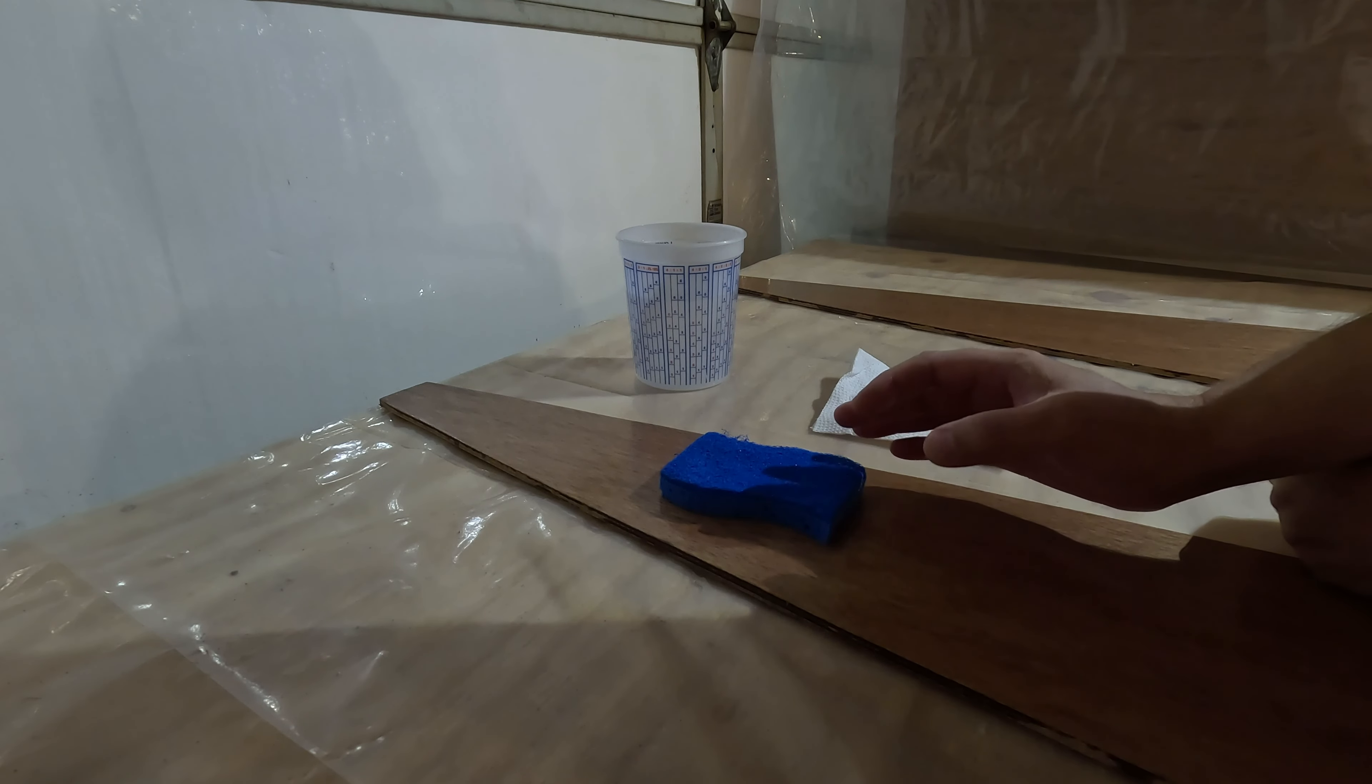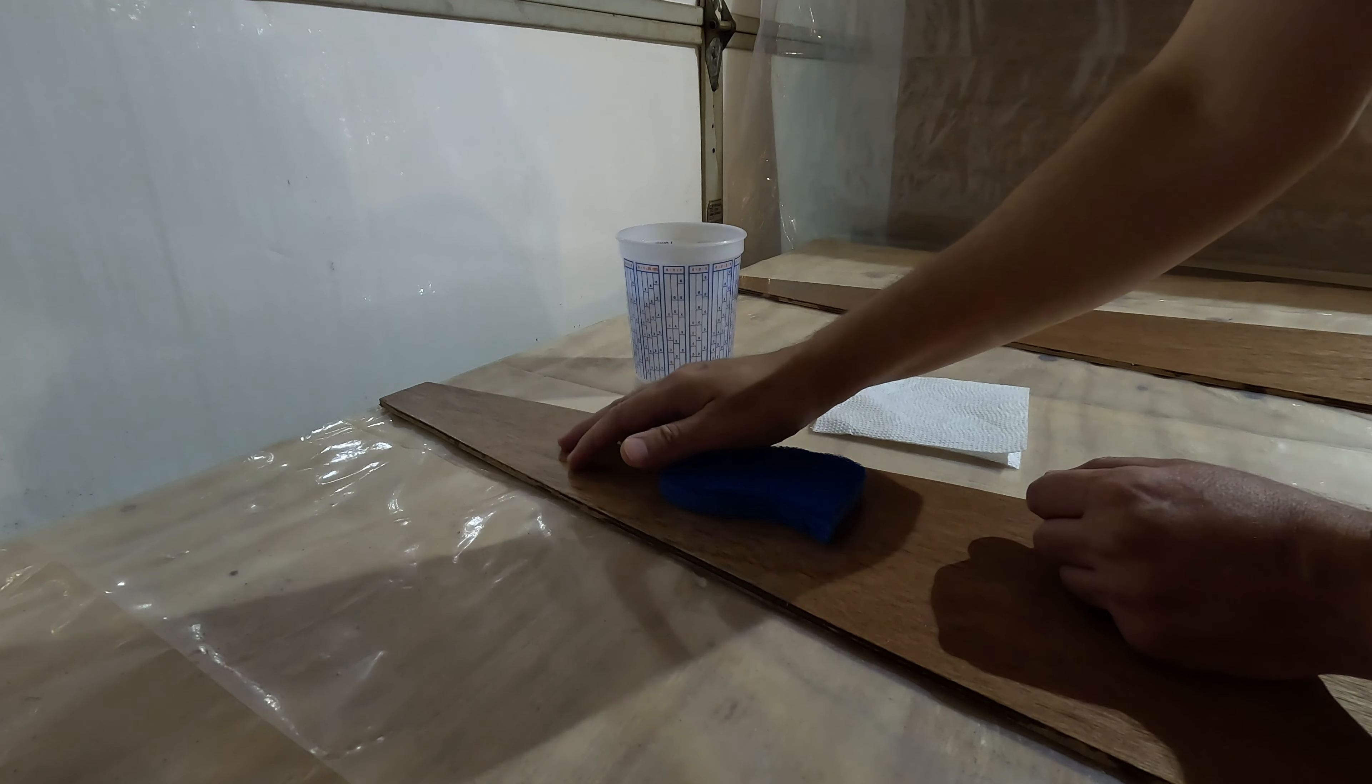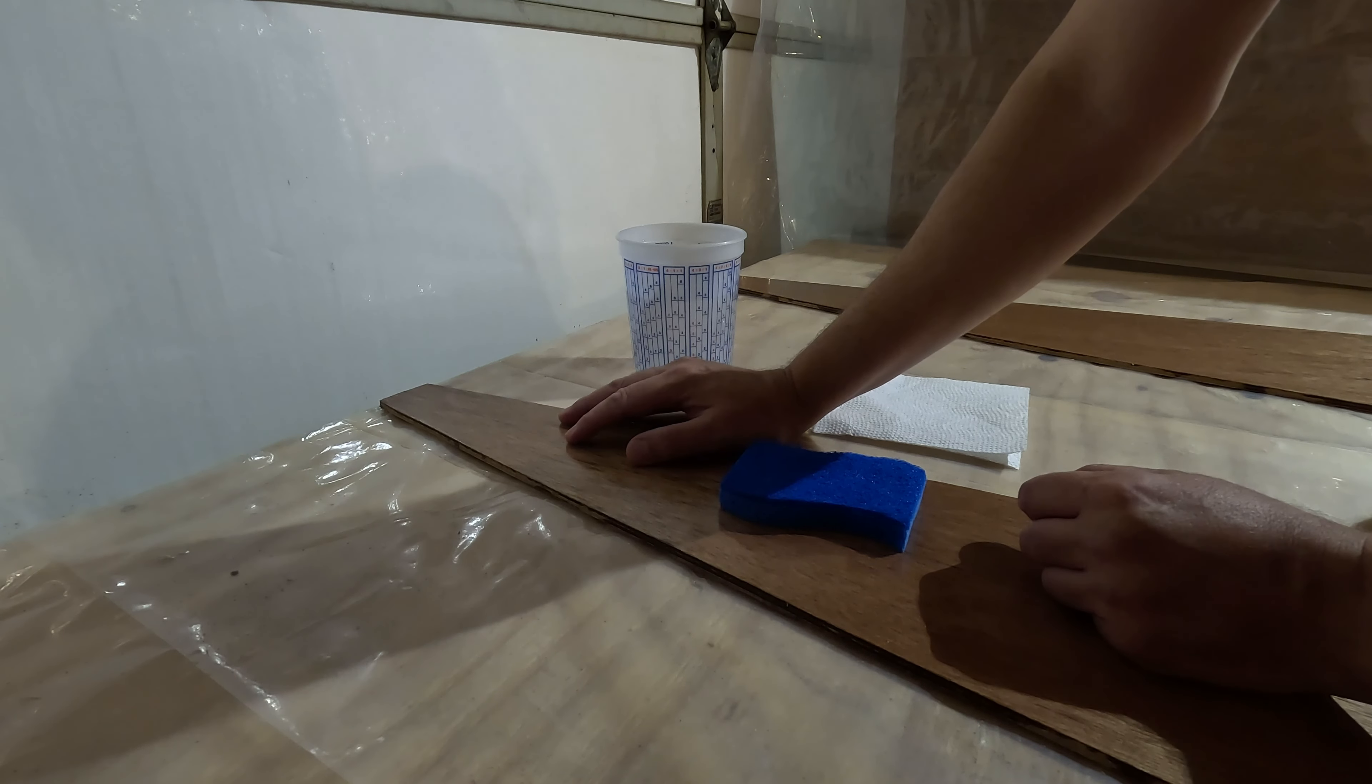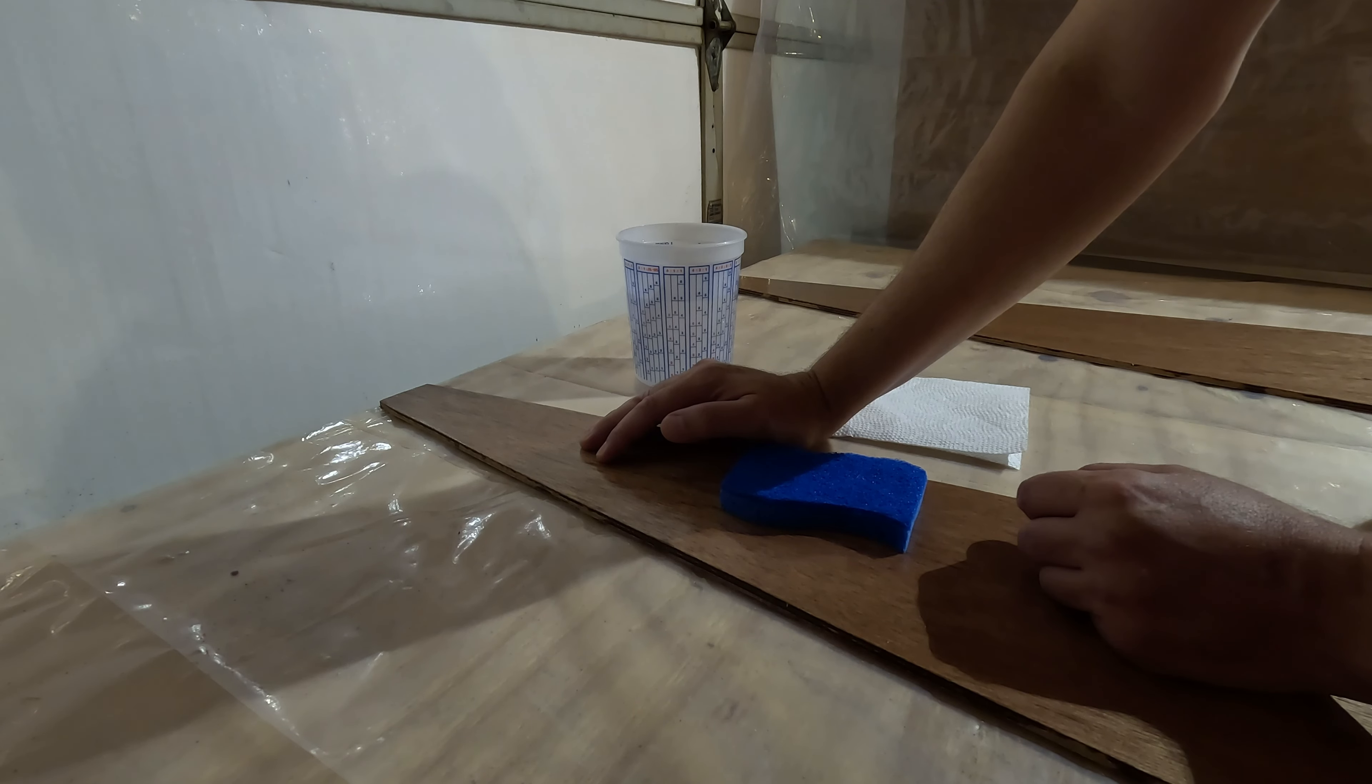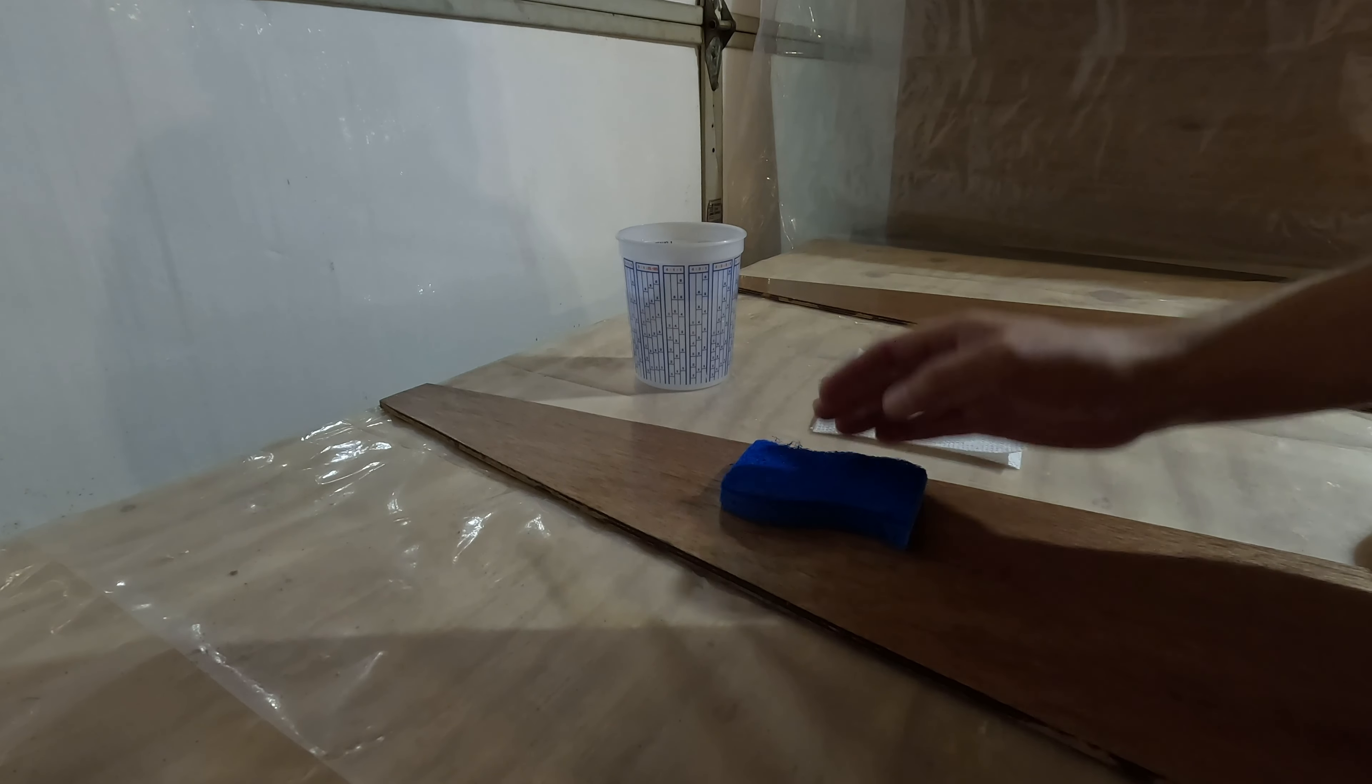So one thing that this will cause is if you don't remove this residue from the epoxy, what will happen is any additional layers that you put on top of the cured epoxy may not stick to it and you can get delamination. So it's really important to remove this, especially if it's on there really bad. Now I'll explain what that is in just a moment, but it does need to be removed.